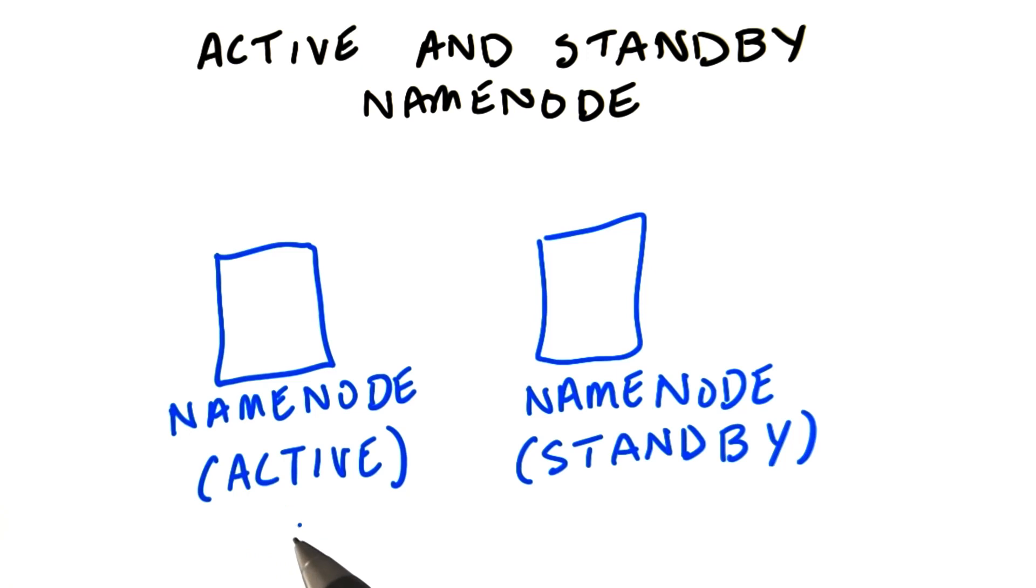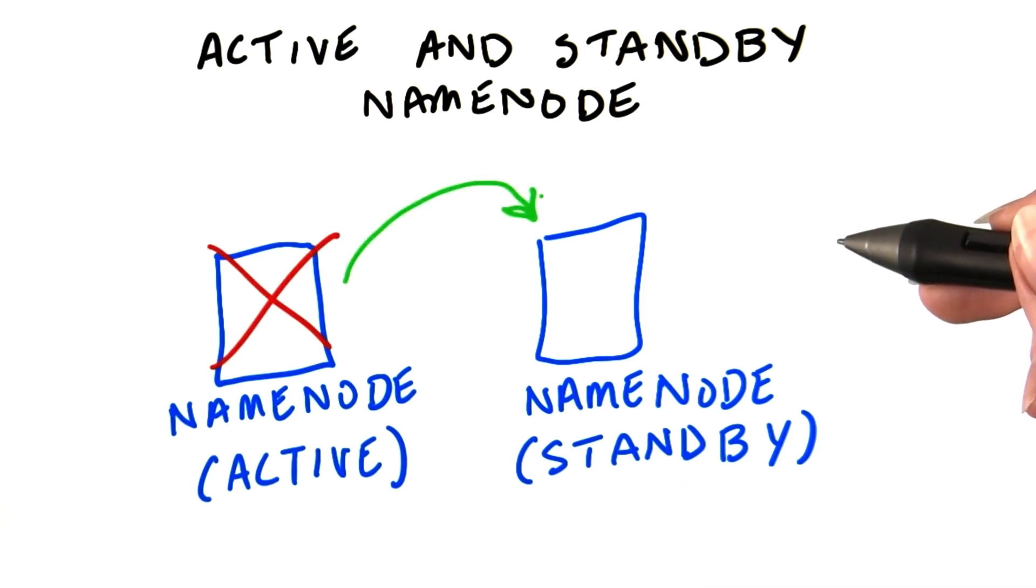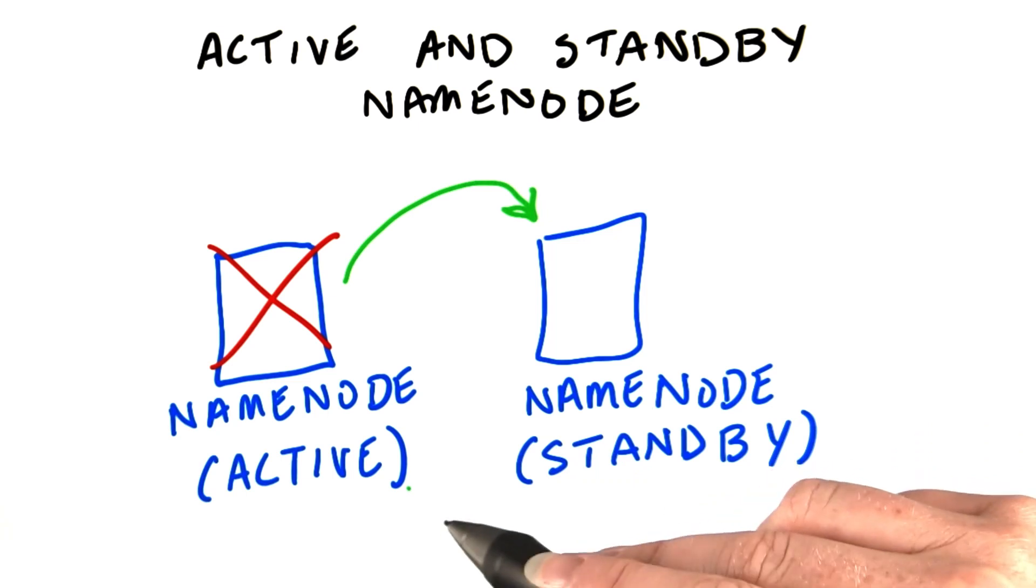The active name node works as before, but the standby can be configured to take over if the active one fails. That way, the cluster will keep running if any of the nodes, even one of the name nodes, fails.